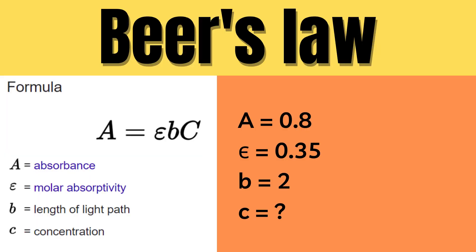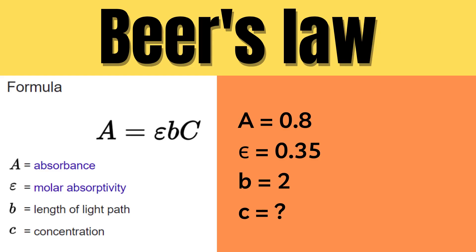Let us demonstrate how to calculate this concentration using an example. Let us imagine that absorbance equals 0.8, molar absorptivity equals 0.35 centimeter to the power of minus 1 and molar to the power of minus 1, and then finally the path length will equal 2 centimeters. So we'll use those numbers for this example.